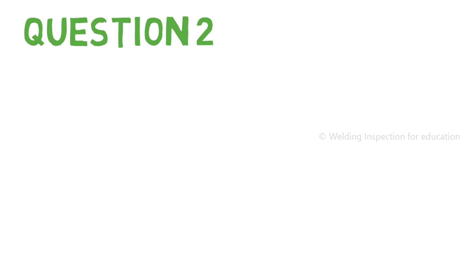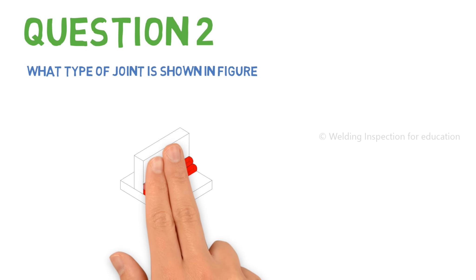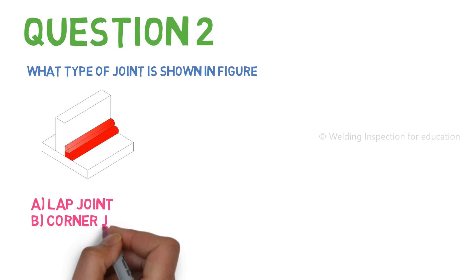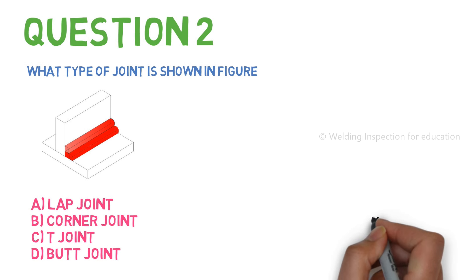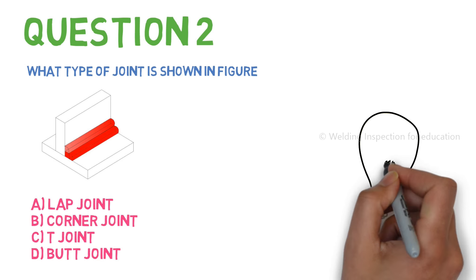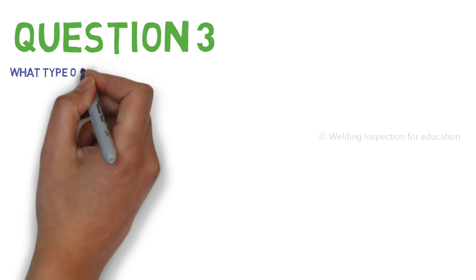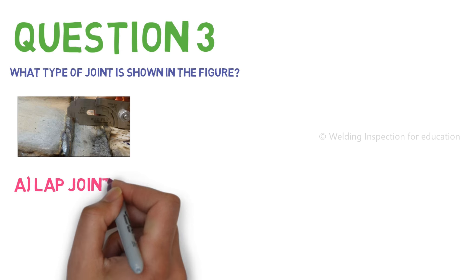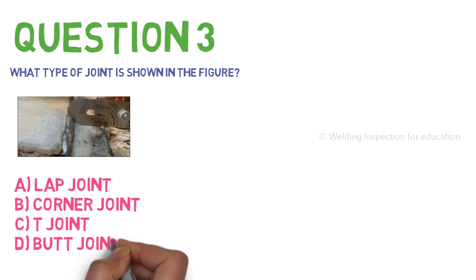Question number two: what type of joint is shown in the figure? A. Lap joint, B. Corner joint, C. T joint, D. Butt joint. Question number three: what type of joint is shown in the next figure? A. Lap joint, B. Corner joint, C. Butt joint, D. T joint.